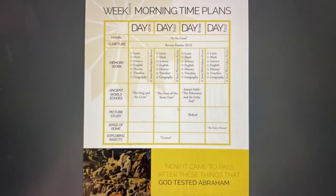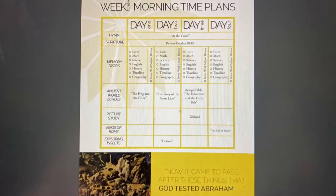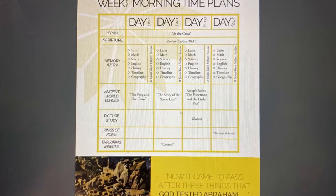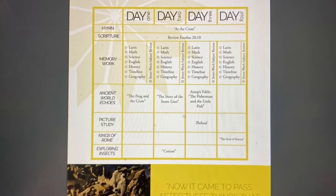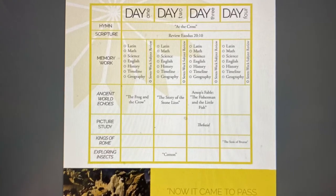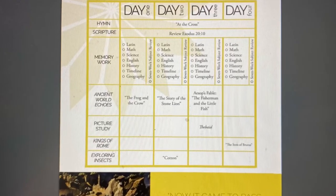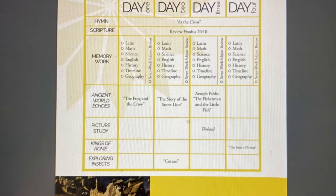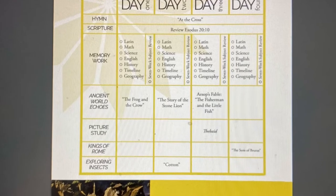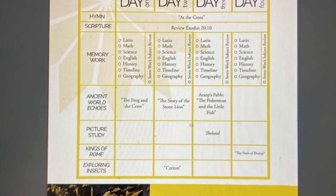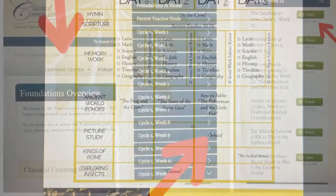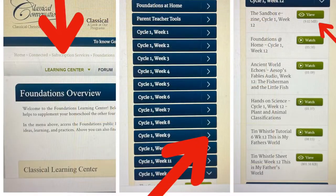Here's what the morning time plan looks like. It outlines four days, includes your memory work, and then the readings from the Ancient World Echoes, Kings of Rome, and Exploring Insects. You can find these in the Learning Center of CC Connected. Click the week you want and then click the sandbox.